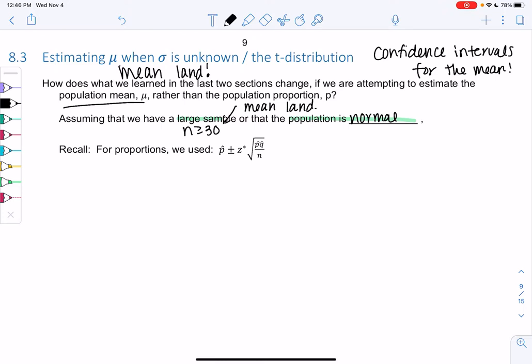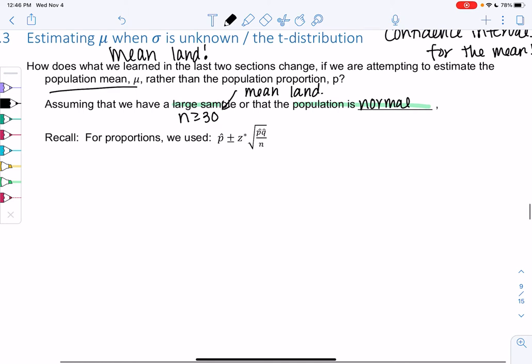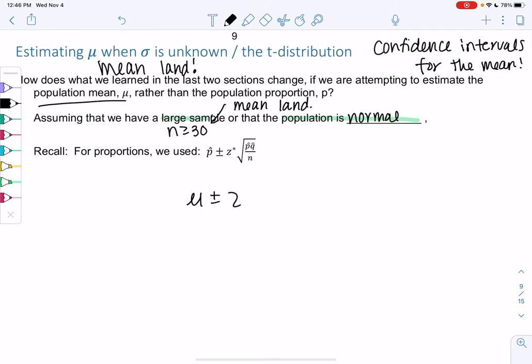I'm going to alter the formula for proportions a little bit to make it apply to means. Our confidence interval for proportions was p-hat plus or minus the z-score times the square root of p-hat q-hat over n. That was the mean plus or minus the z-score times the standard deviation. To mean land, we're going to find the mean of x-bar and the standard deviation of x-bar.